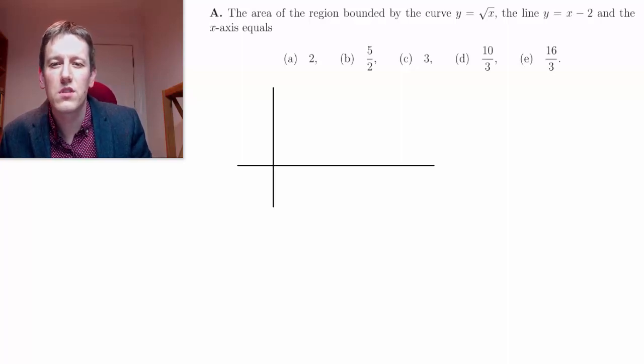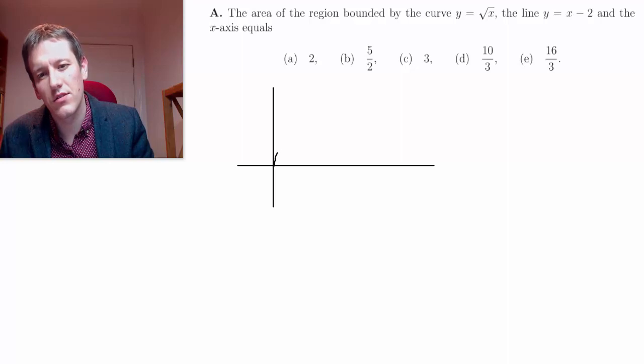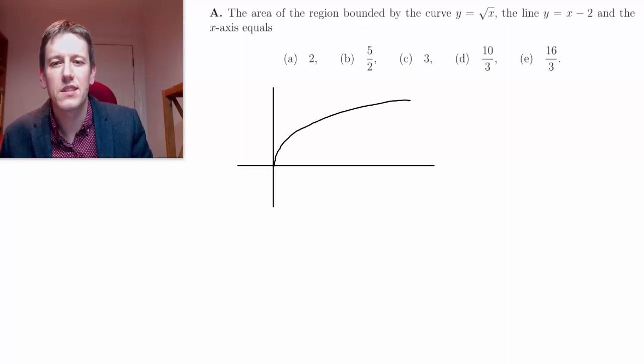So we can think about the region we're looking at. y equals the square root of x, I can't do these as well as I can on real paper, but here we go, something like that. It's like the top half of y equals x squared rotated, as hopefully you know, and the line y equals x minus 2.